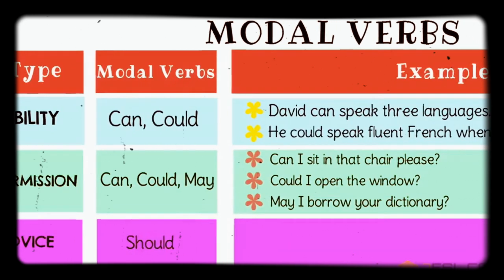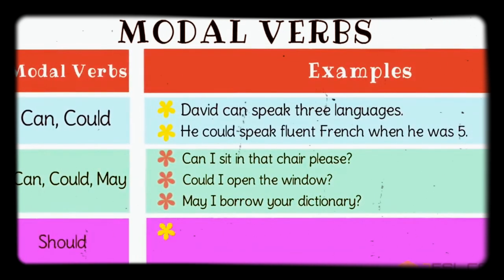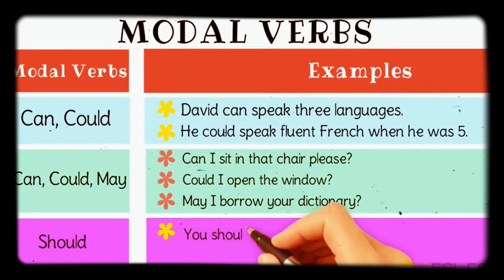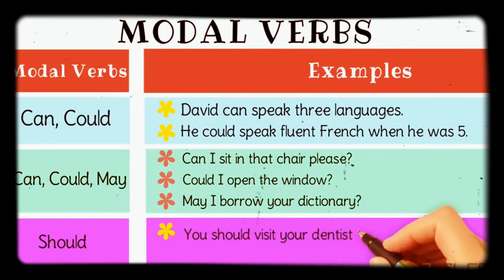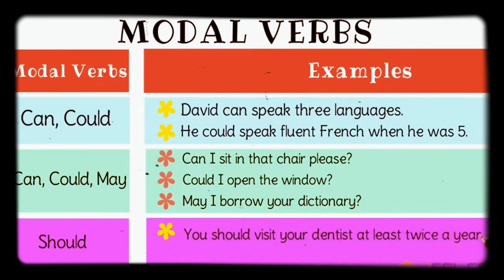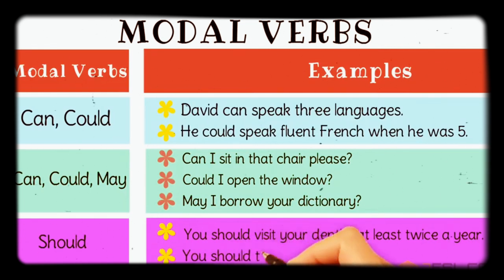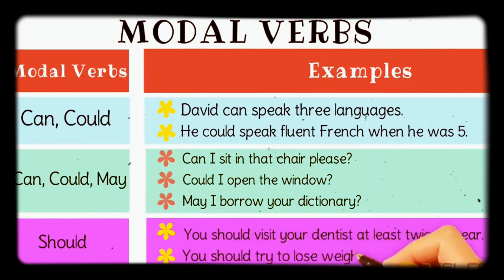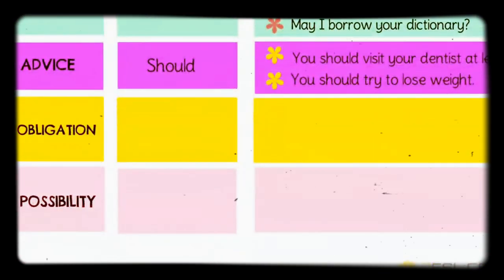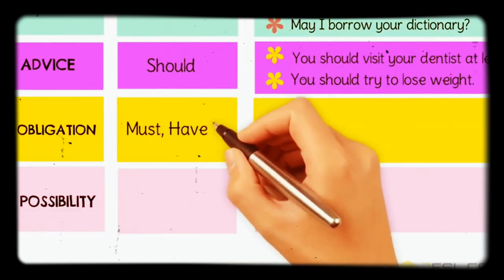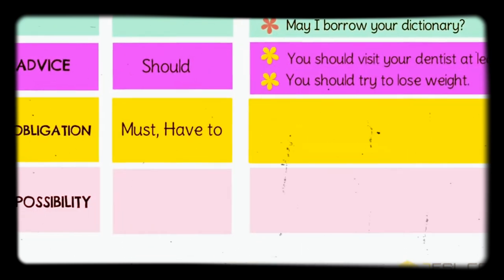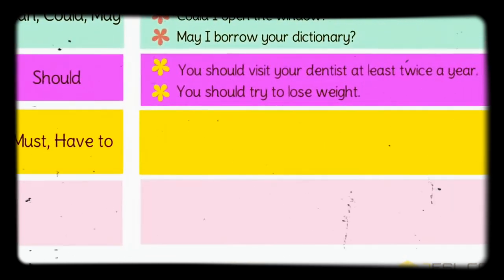For advice — nashihat — when giving someone advice or mashwara, you use 'should'. For example: 'You should visit your dentist at least twice a year,' 'You should work hard,' 'You should help the poor,' and 'You should try to lose weight.' This is just advice.